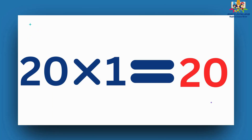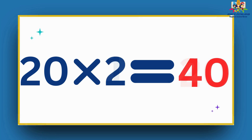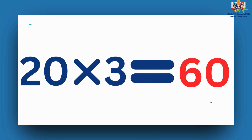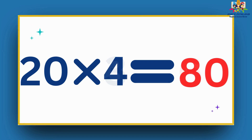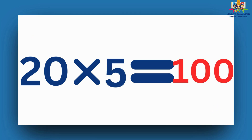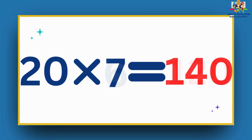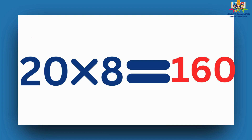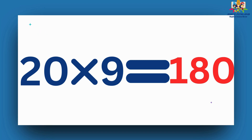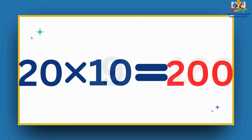20 1s are 20. 20 2s are 40. 20 3s are 60. 20 4s are 80. 20 5s are 100. 20 6s are 120. 20 7s are 140. 20 8s are 160. 20 9s are 180. 20 10s are 200.